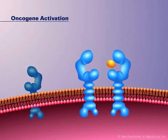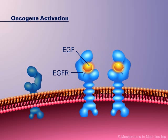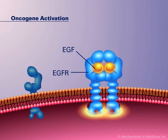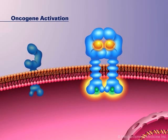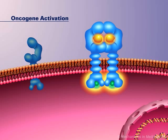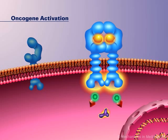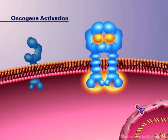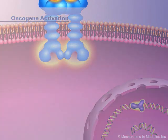In 50 to 90% of NSCLC cases, the epithelial growth factor receptor, or EGFR oncogene, is upregulated. The binding of EGFR activates signaling cascades that modulate the transcription of genes important in cell proliferation and resistance to apoptosis.